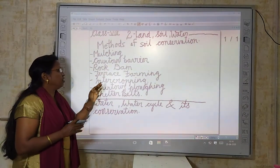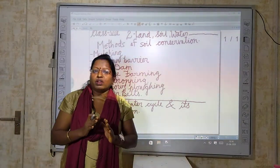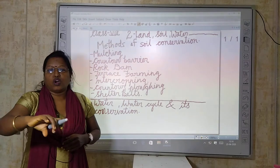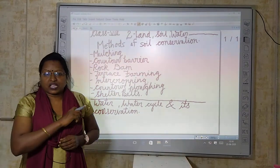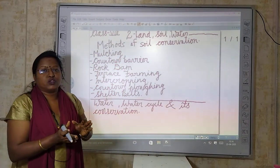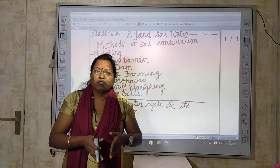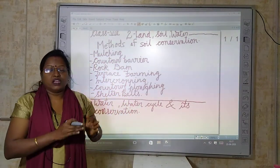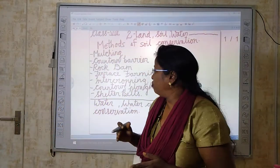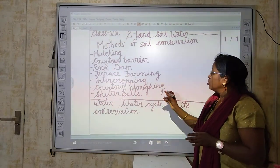Next is intercropping. When we observe a field, we see rows of crops. Intercropping means during one season we sow the seeds in a particular row, and in the next season we sow the seeds in a different row. In this way intercropping is also one method to conserve our soil.